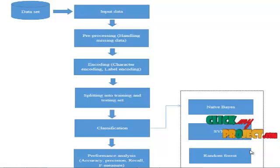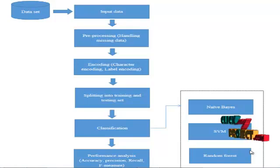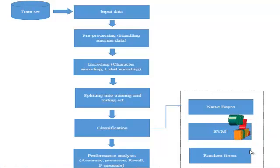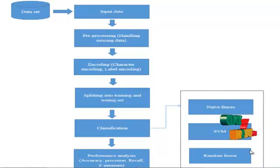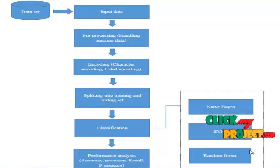Now let's look at the workflow of the chronic kidney disease prediction. First, we choose the dataset and input the data. The next step is preprocessing, where we handle the missing data — we replace all missing integer values with zero and perform label encoding to classify the data into two categories.